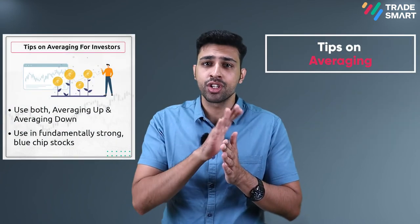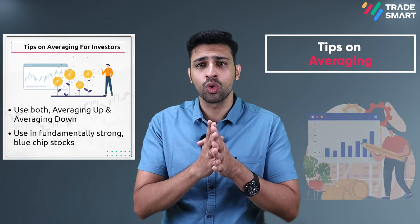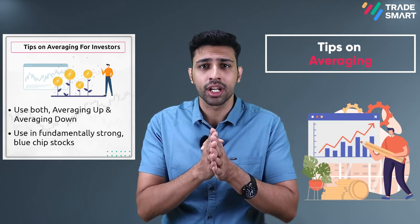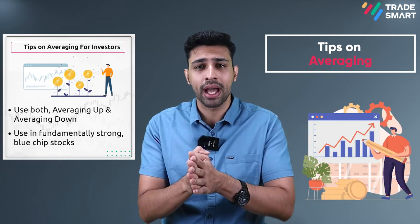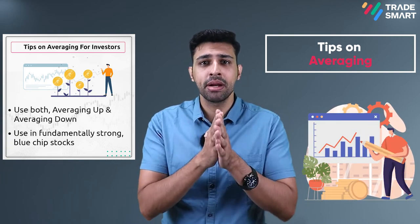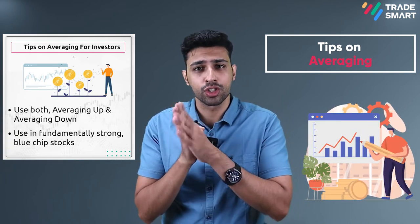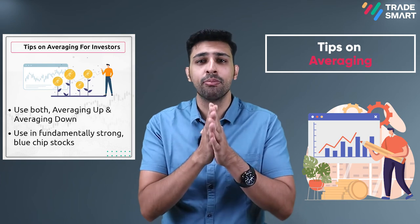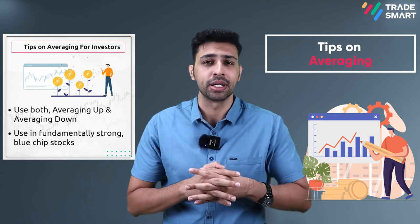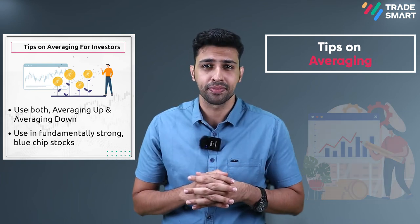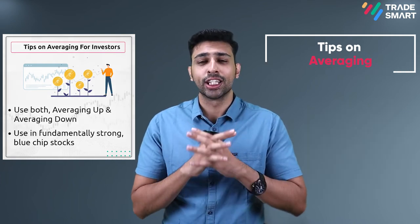Whether you are averaging down or averaging up, what is most important is to buy fundamentally strong stocks or blue-chip companies.